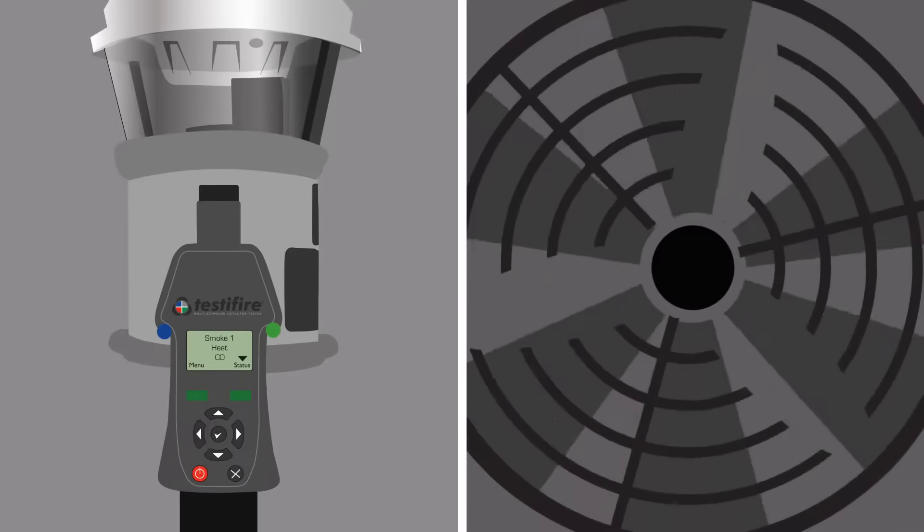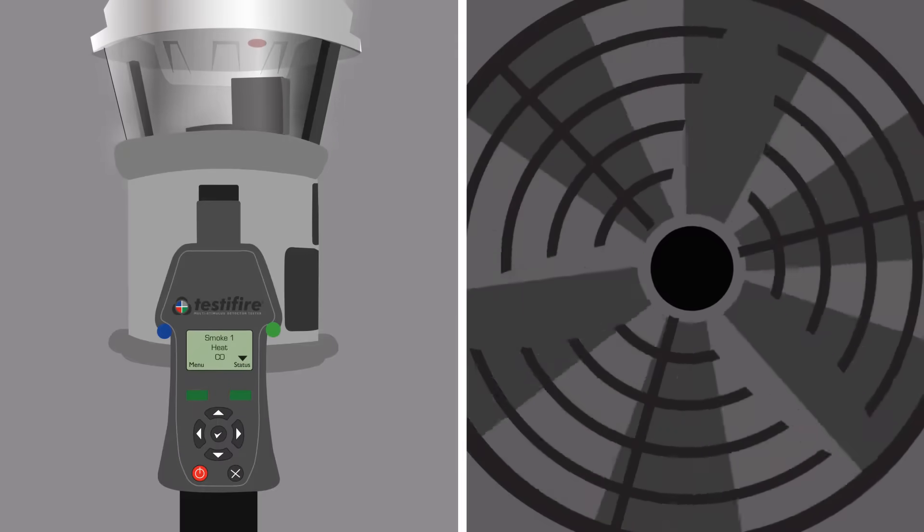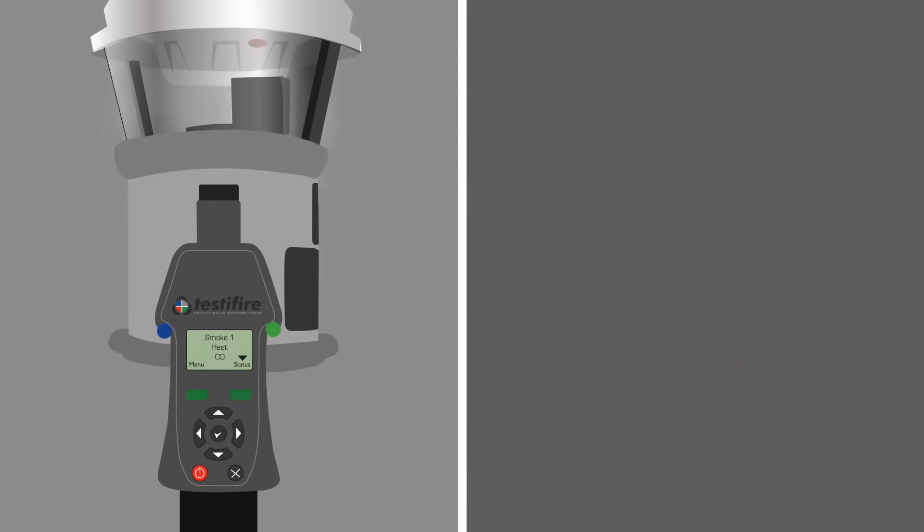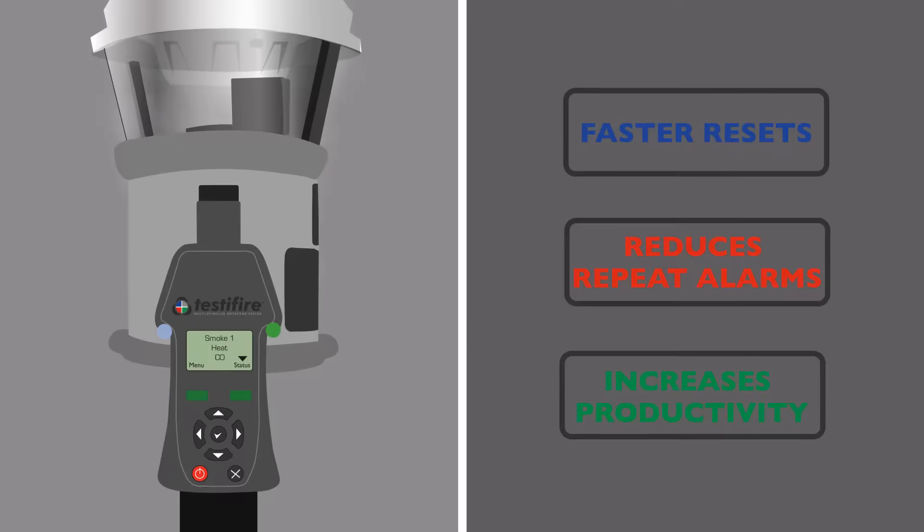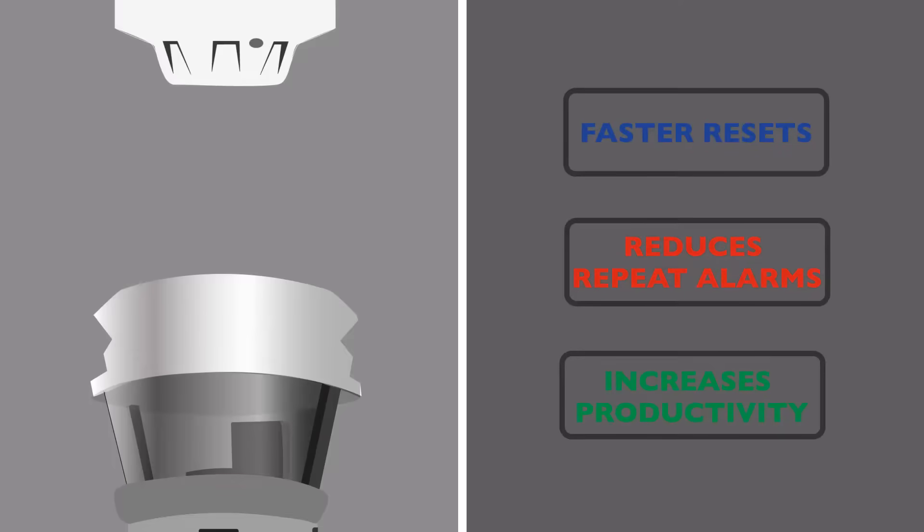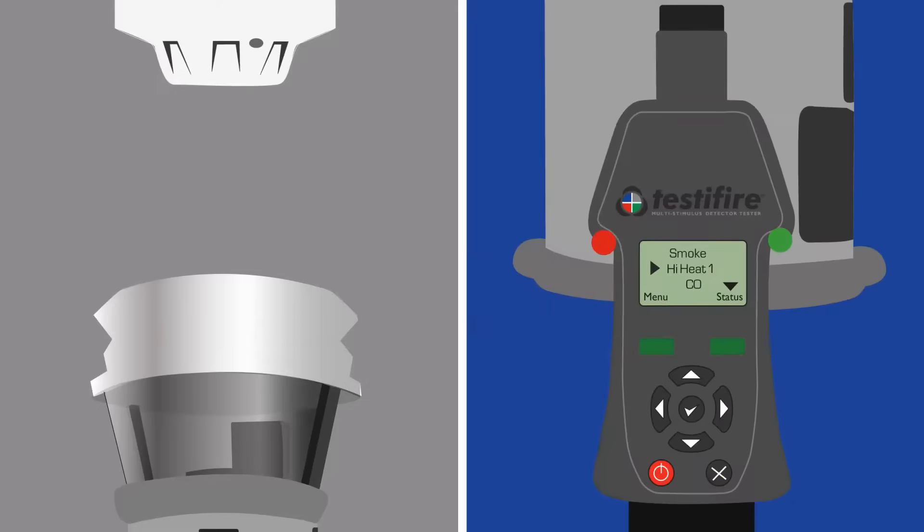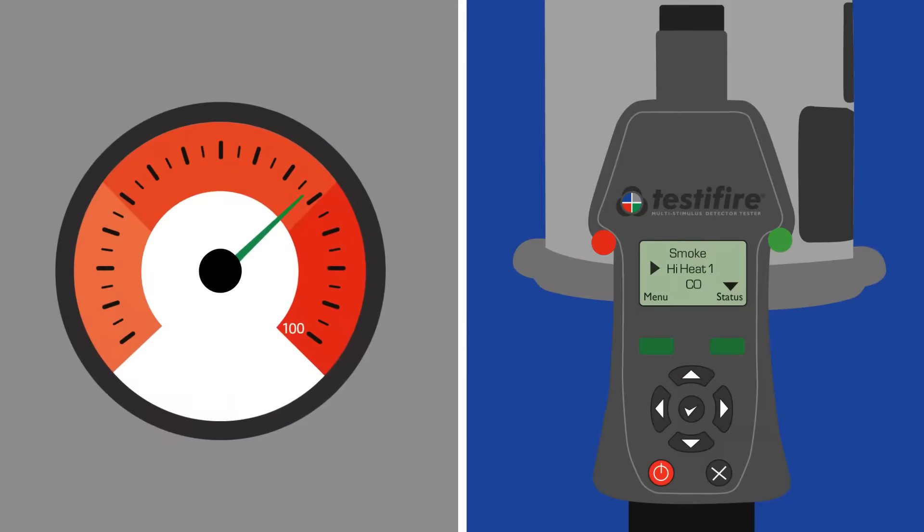And that's not all. Users tell us that the clearing function and the high heat setting are real advantages. The clearing function blows smoke away from the detector, preventing repeat alarms and saving significant time on site. The high heat settings allow for testing of heat detectors that require a temperature higher than 90 degrees Celsius to activate.